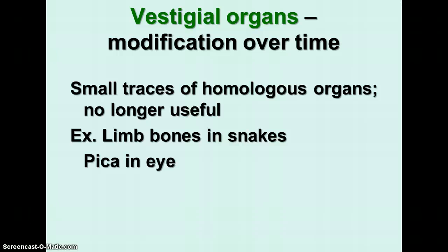The fourth and final evidence of evolution is vestigial organs. These are organs that have been modified over time — often parts that are lost or almost lost. They are small traces of homologous organs no longer useful in the modern species, so they've been reduced in size. An example is in snakes: some snakes have little bone spurs that are probably the remains of limbs, because snakes once had a common ancestor that did have limbs. Also, in the inner corner of the human eye, the small pink structure called the plica is the remains of an inner eyelid.